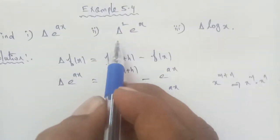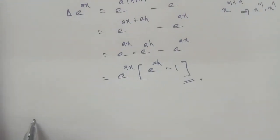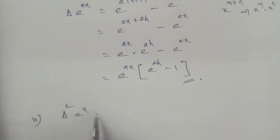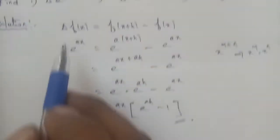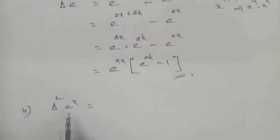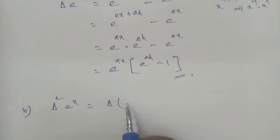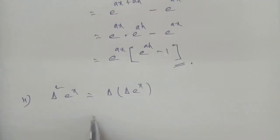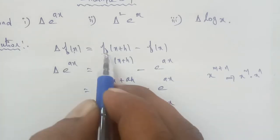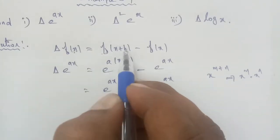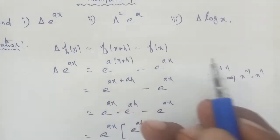Next, Subdivision 2: Delta square e power of x. For Subdivision 2, delta square e power of x. Again applying the formula — delta square can be split as delta into delta. So delta delta into e power of x. Applying the formula: delta f of x equals f of x plus h, where x term has 1 h term added, minus f of x.